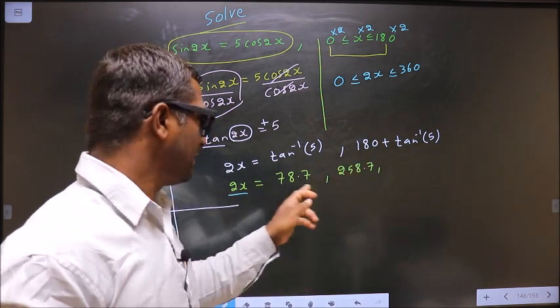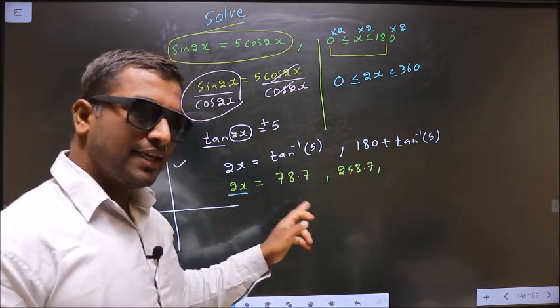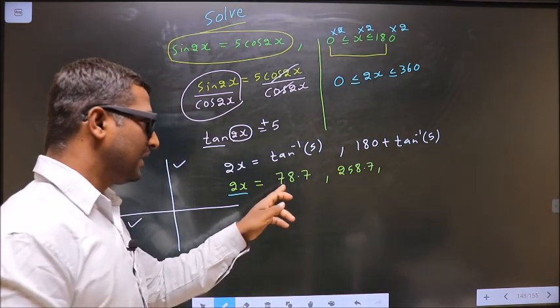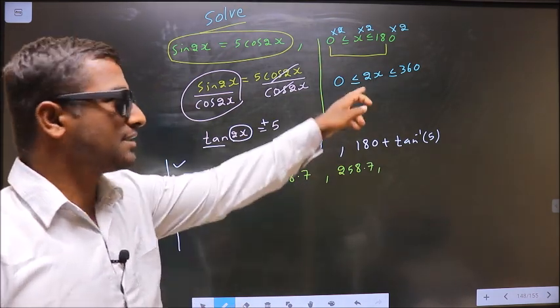Now, you should check here, whether 2x lie in the interval 0 to 360 or not. Here we have checked, these two lie in this interval.